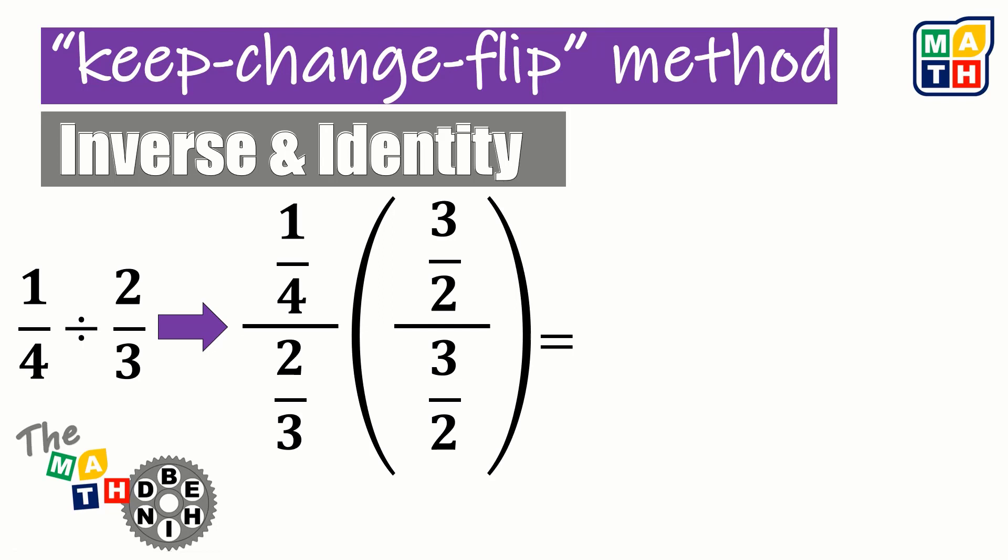Next thing is we are going to multiply the given expressions. When we multiply the denominators, since we are multiplying 2 thirds and 3 halves, being one of them is the inverse property of the other, the result will be 1. Because that's 2 times 3, 6, and then 3 times 2, 6, 6 over 6 is 1, that is why our result is 1.